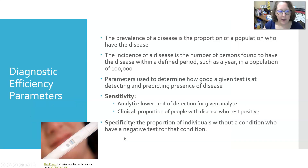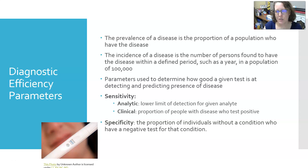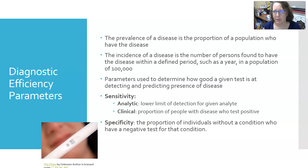First, let's start with diagnostic efficiency parameters. The prevalence of a disease is the proportion of a population who have the disease. The incidence of a disease is the number of persons found to have the disease within a defined period, such as a year, in a population of a hundred thousand — for example, an incidence of 6.5 per hundred thousand.